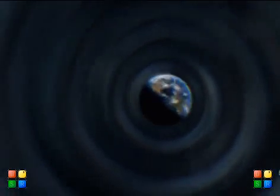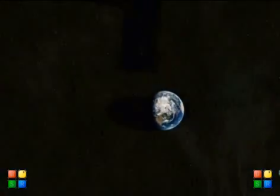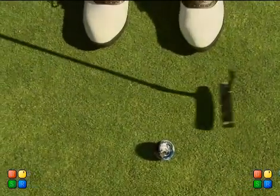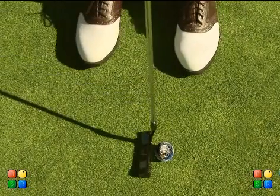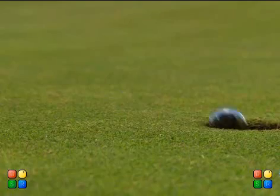When the Earth crushes down to just two inches across, that's the density of a black hole. It would be the size of a golf ball, yet weigh the same as the Earth, with the same amount of gravity.